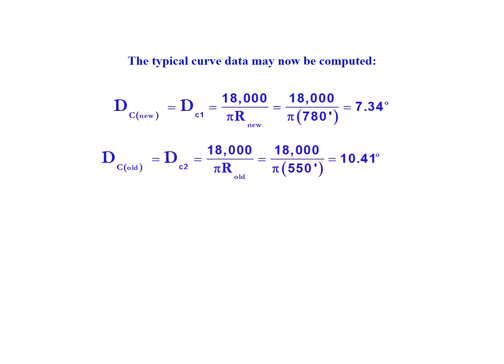Our degree of curvature for our existing curve is 18,000 over pi times the radius of 550 feet, gives us a DC2 of 10.41 degrees.